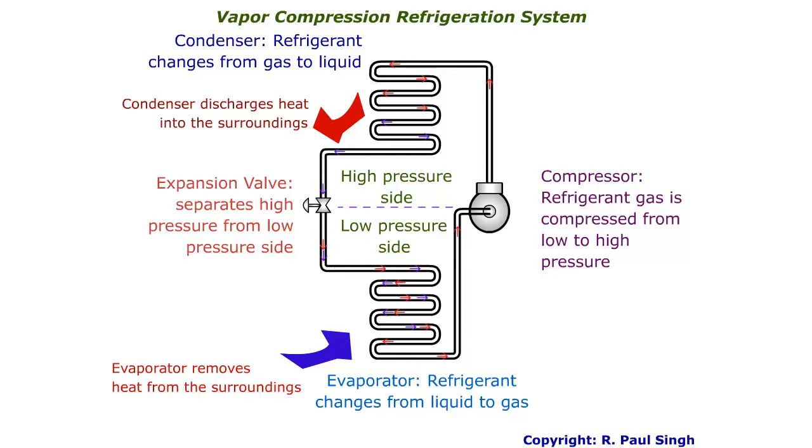So the refrigerant is flowing through this system. Note that we have a high-pressure side and a low-pressure side. In this animation, the color of the arrows indicate the condition of the refrigerant.